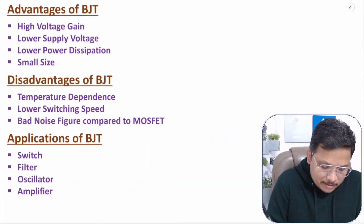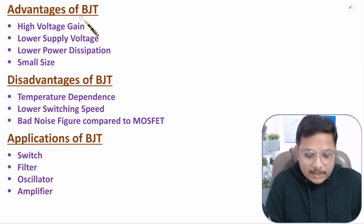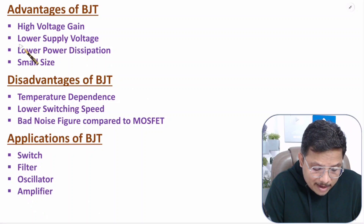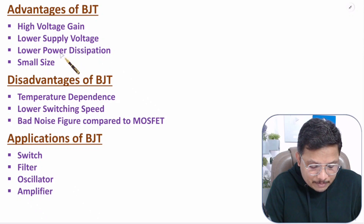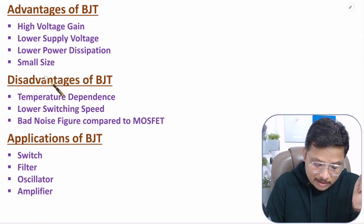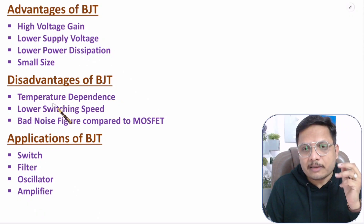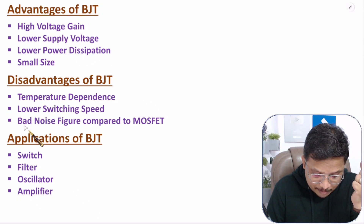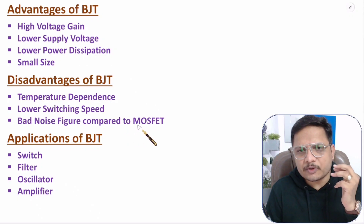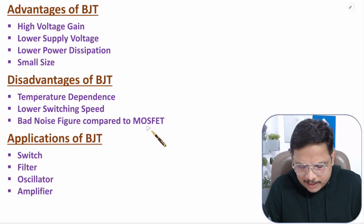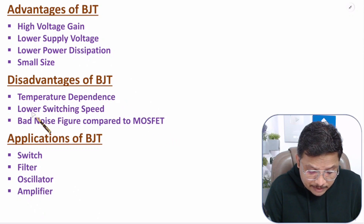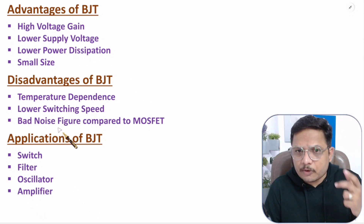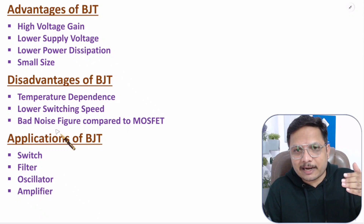For advantages: BJT has high voltage gain, requires lower supply voltage, has lower power dissipation, and is small in size. For disadvantages: it has temperature dependency, lower switching speed compared to MOSFET, and a worse noise figure compared to MOSFET. That's why in VLSI industries we use MOSFET rather than BJT — switching speed is less and it has a bad noise figure. In basic electronics we use BJT, but in very large scale integration circuits we use MOSFET.